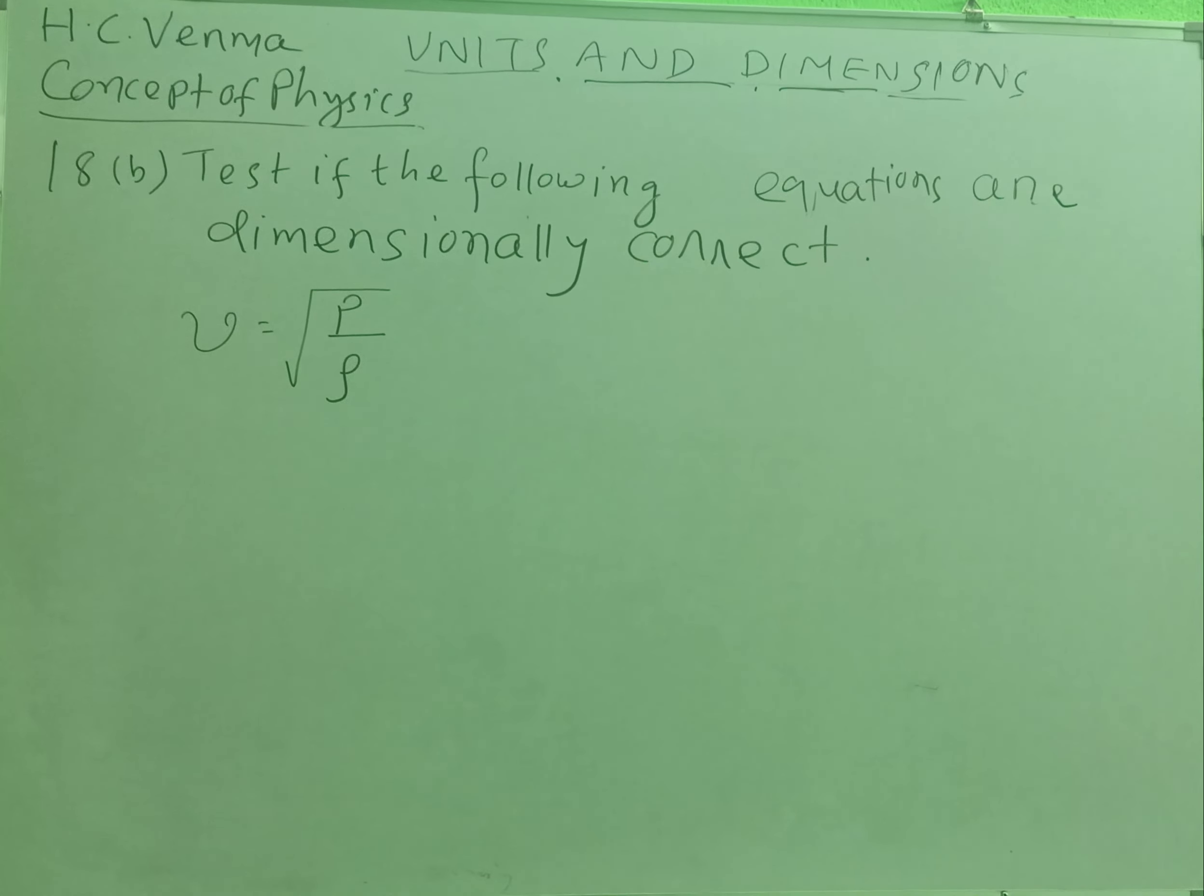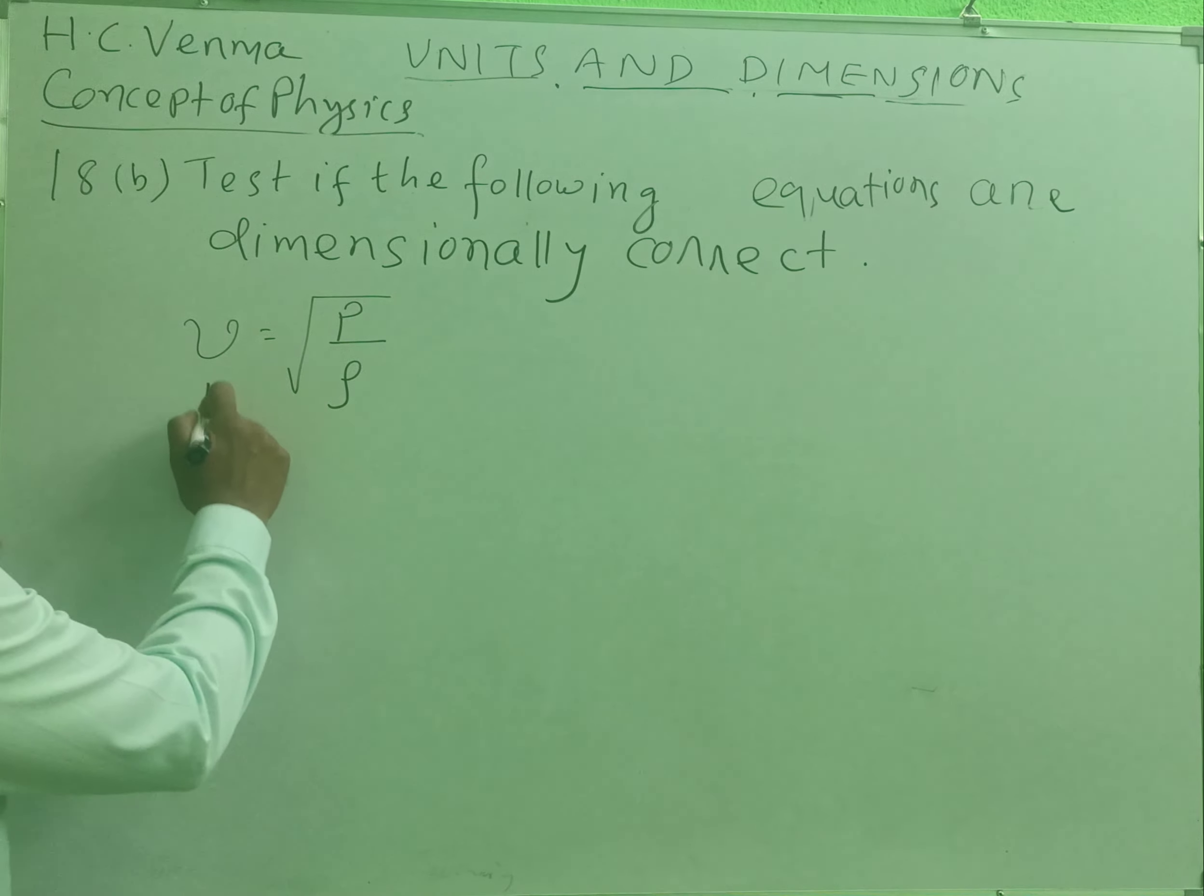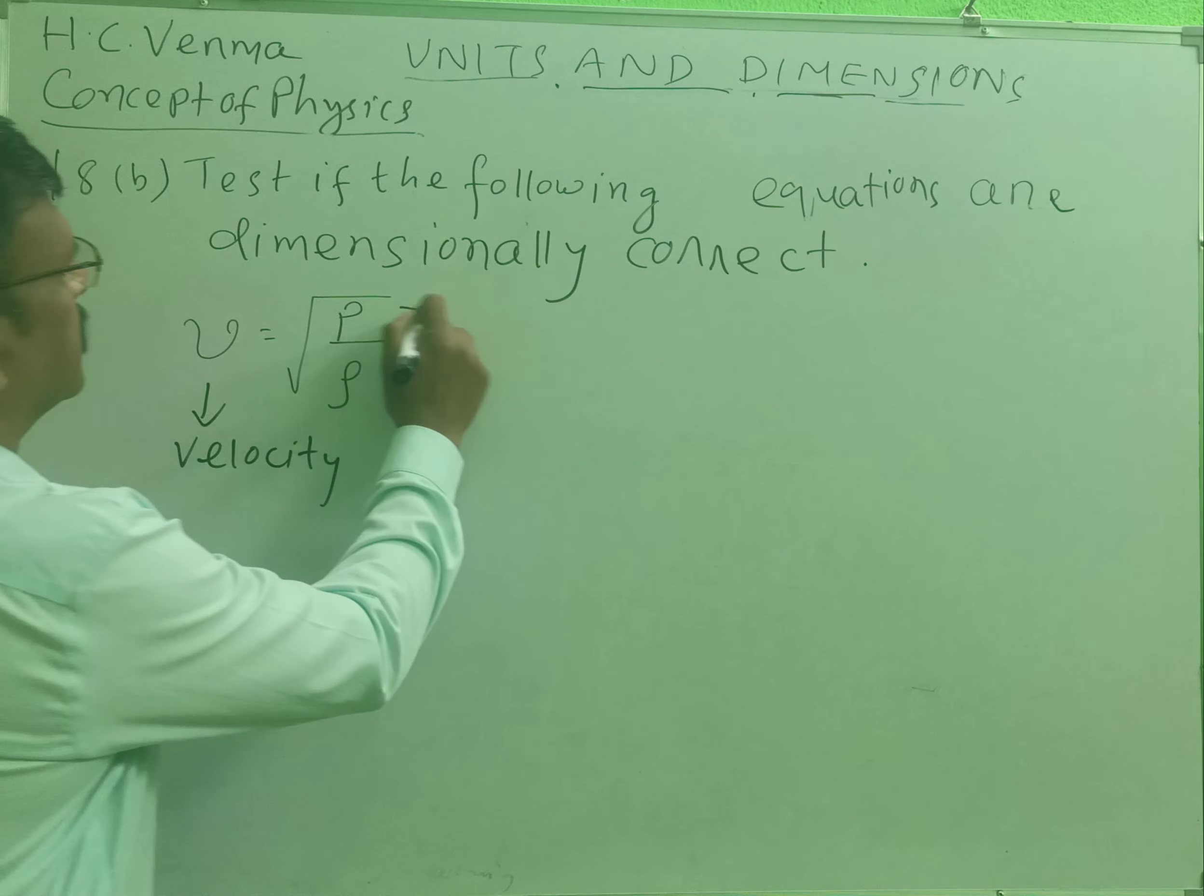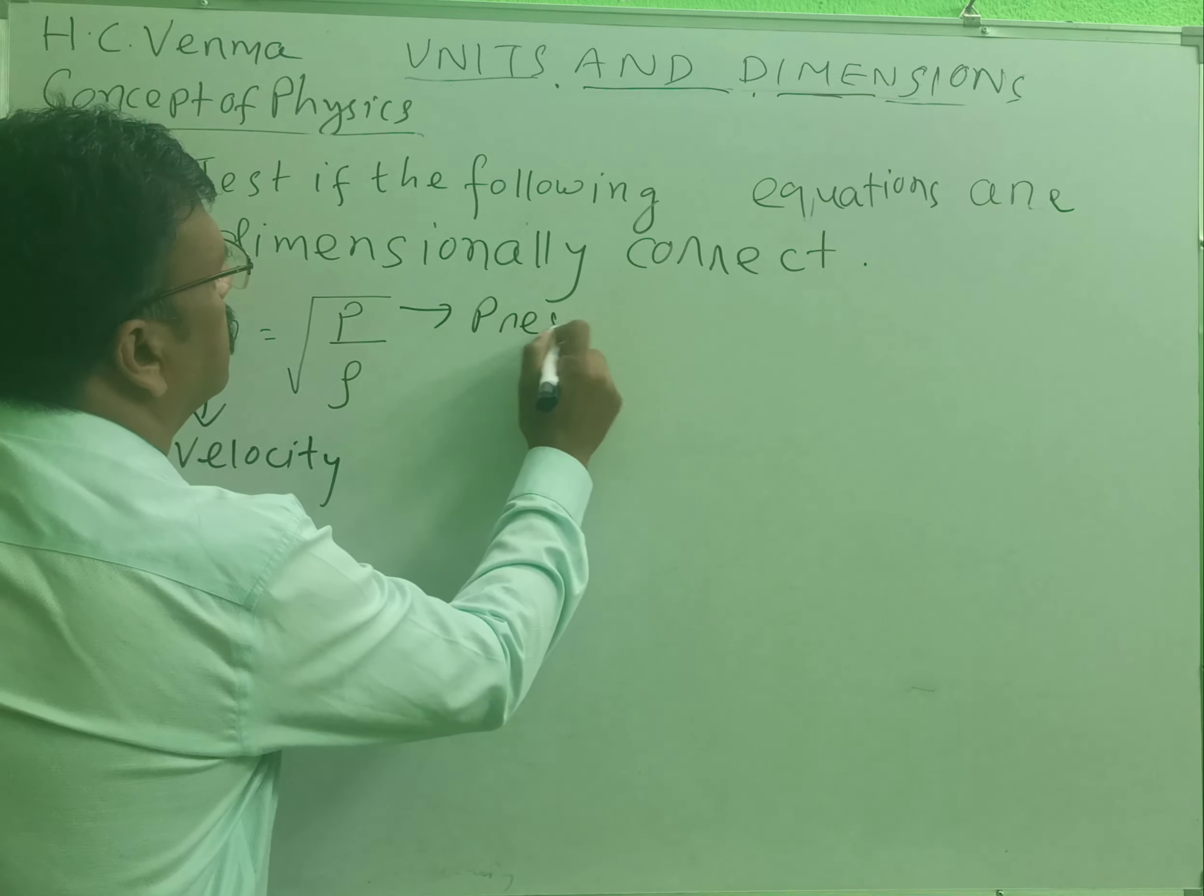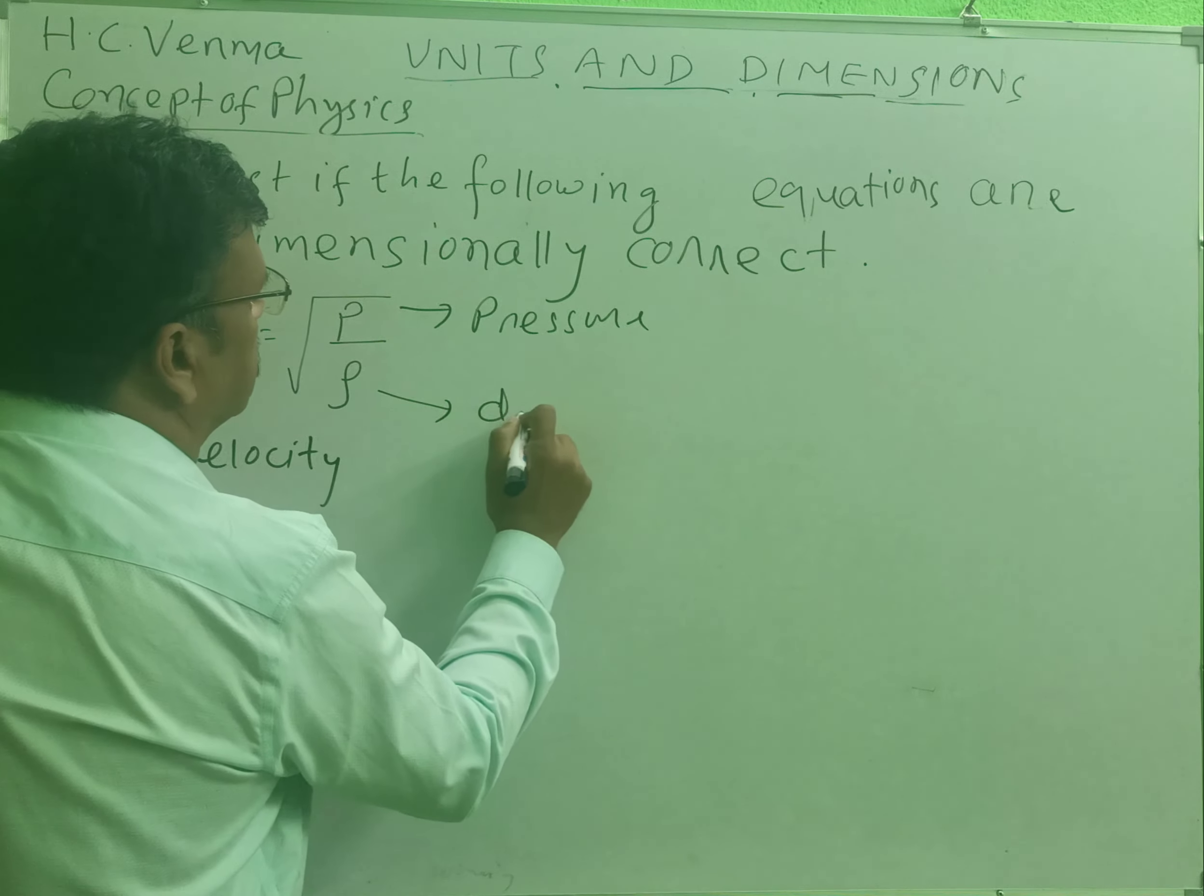V is equal to root over P by rho. What is V? V is velocity, P is pressure, and rho is density.